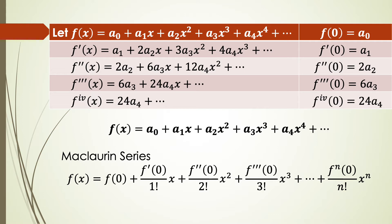So we substitute the coefficients a0, a1, a2, a3, a4 into the polynomial function. We get the Maclaurin series: f(x) equal to f(0) plus f'(0) over 1 factorial times x, plus f''(0) over 2 factorial times x², plus f'''(0) over 3 factorial times x³, and so on.